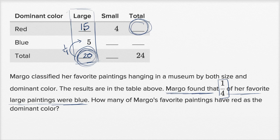Now if you have 15 red large, and if you have four red small, the total number of red is 15 plus four is 19. So 19 of Margot's favorite paintings have red as the dominant color.